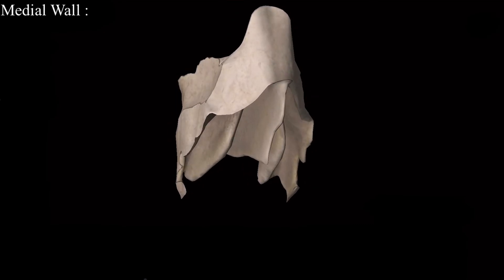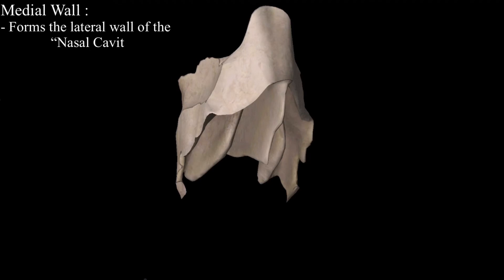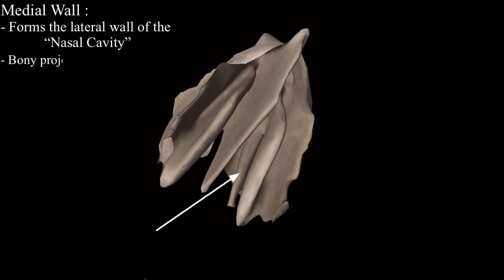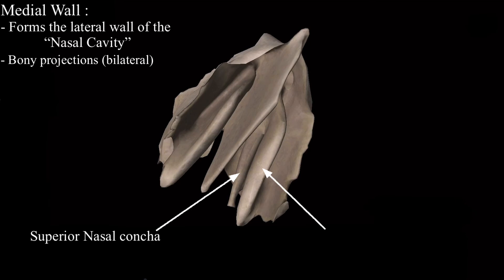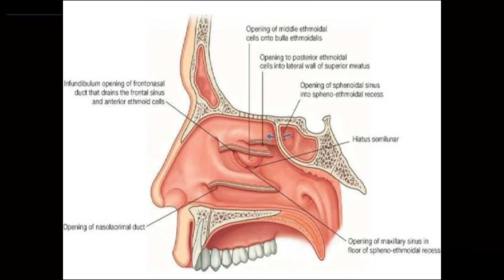Now we come to the medial wall of the labyrinth of the ethmoid bone. The medial wall of the labyrinth forms the lateral wall of the nasal cavity. In the medial wall of the ethmoid bone, there are two bony projections called the superior nasal concha and the middle nasal concha. Now let's look at the lateral wall of the nasal cavity and remove the nasal conchae to look at the structures underneath. These structures are difficult to understand on the ethmoid bone alone, so we are looking at the lateral wall of the nasal cavity to better understand them.